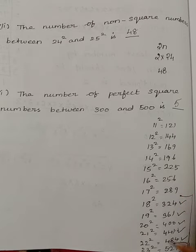Here we have to check the numbers. It should be between 300 and 500. The numbers between 300 and 500 are: 324, 361, 400, 441, 484. So these numbers are from 18 square to 22 square. How many numbers are there? 1, 2, 3, 4, 5. So the perfect squares between 300 and 500 is 5.